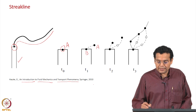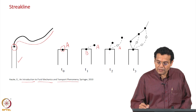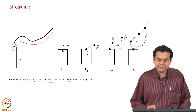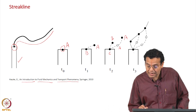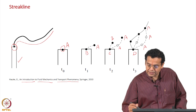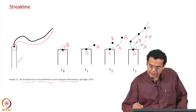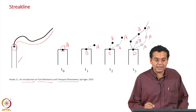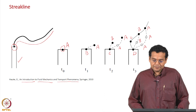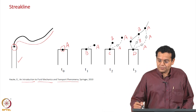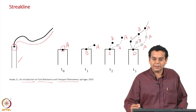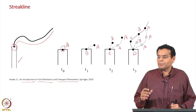Sometime later, particle A has moved further along. Particle B, which was at that location, has now moved, and another particle C is just entering the same location. Then sometime later, another particle D is entering: particle A is further along, particle B has moved here, particle C which just entered in the previous time instant is now here, and D is just entering. Now particle A has taken this path, B has taken this path, C has taken this path — all depending on the fluid flow happening at that location.